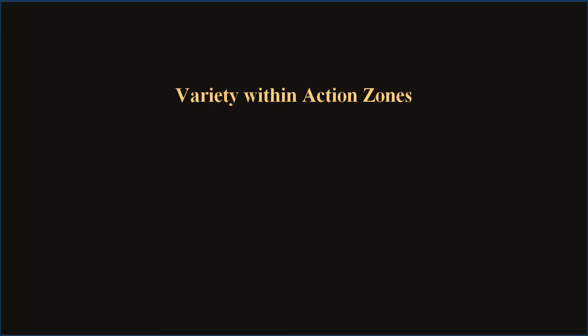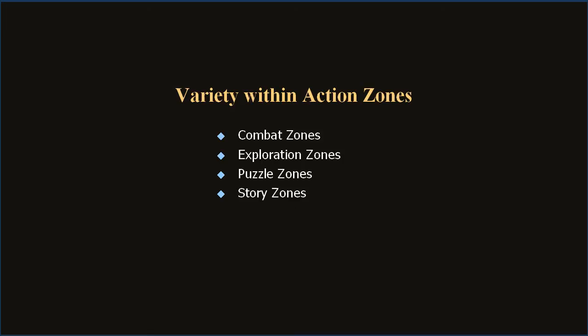A variety of subtypes can exist within an action zone: combat zones, which is the meat most games have; exploration zones — the physical navigation of the environment, like Tomb Raider; puzzle zones — mental roadblocks to the next area with a specific focal point; and story zones — narrative encounters that progress the script. In multiplayer games, these could also be considered social zones.